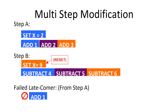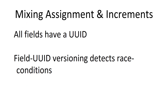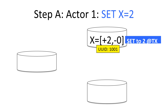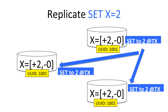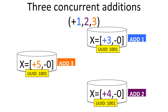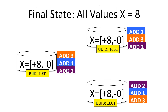Now we're going to do a multi-step modification. First step: set X equal to 2, do some concurrent adds, then reset X to a new value, do some concurrent subtractions, and finally show how a latecomer — the add 1 from step 1 — if applied to step B, is ignored. Because the add 1 was applied to the version X equals 2; it doesn't have anything to do with the reset version X equals 9. The implementation uses field UUIDs — each field has a UUID, and this is how we detect race conditions. When we set X equal to 2 it gets UUID 1001 and gets replicated. We add 3, 1, 2, 3 and all of those have UUID 1001, so they all work and are all applied.